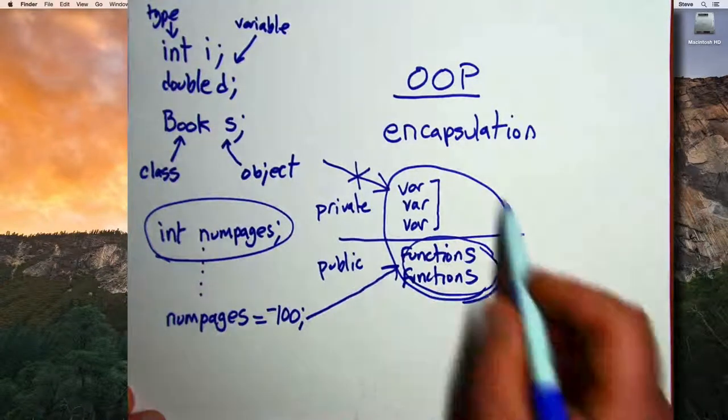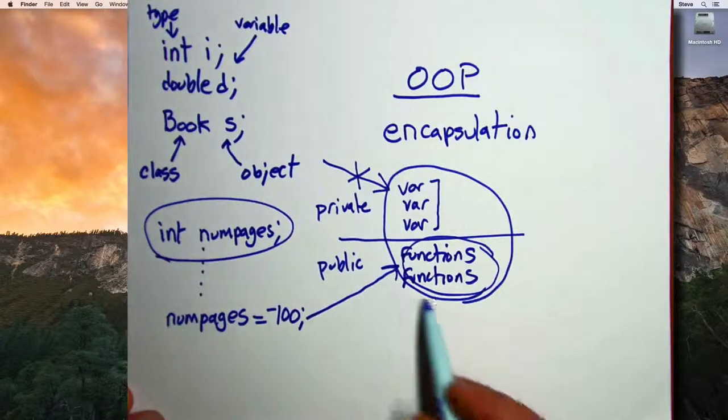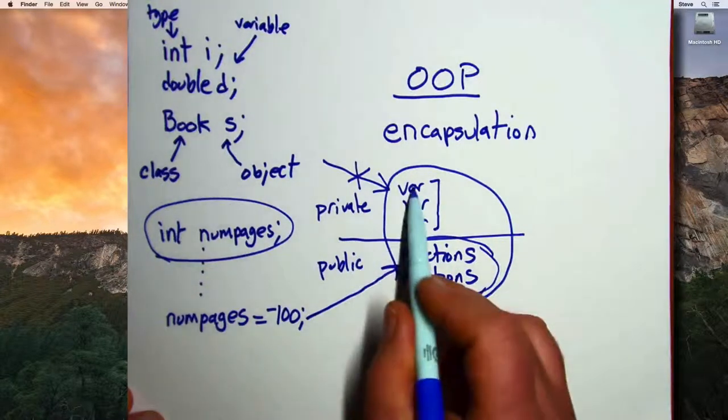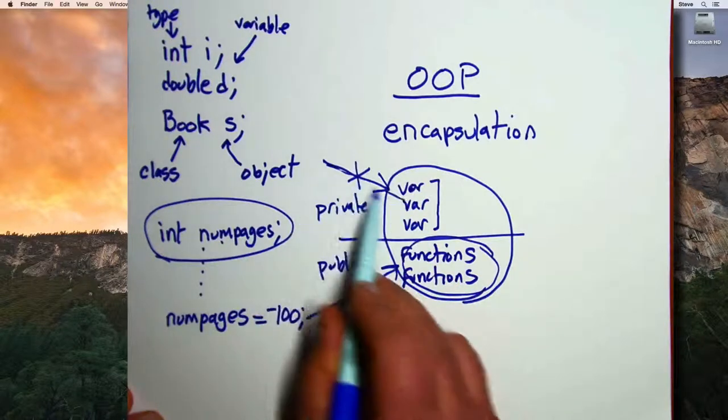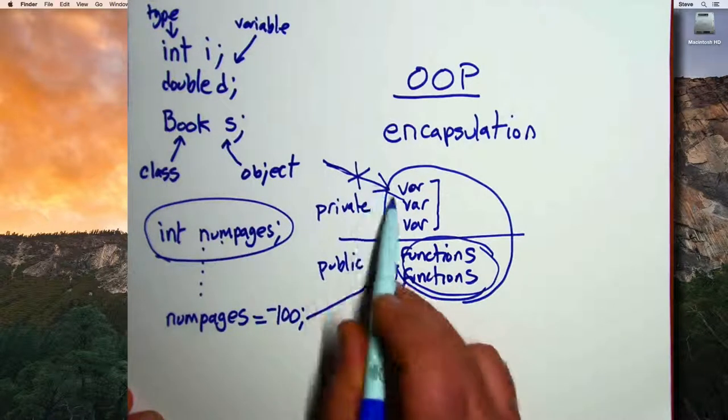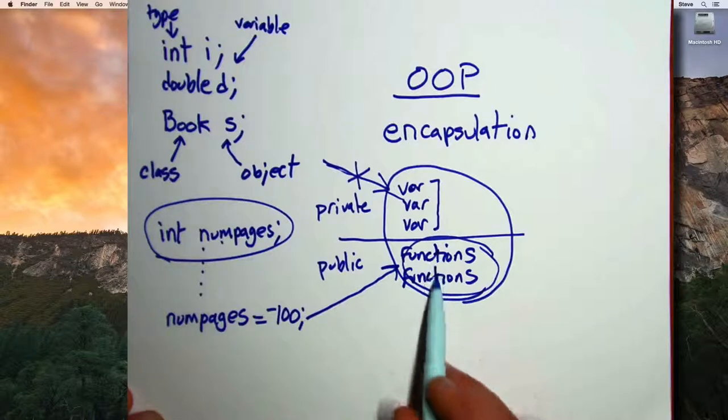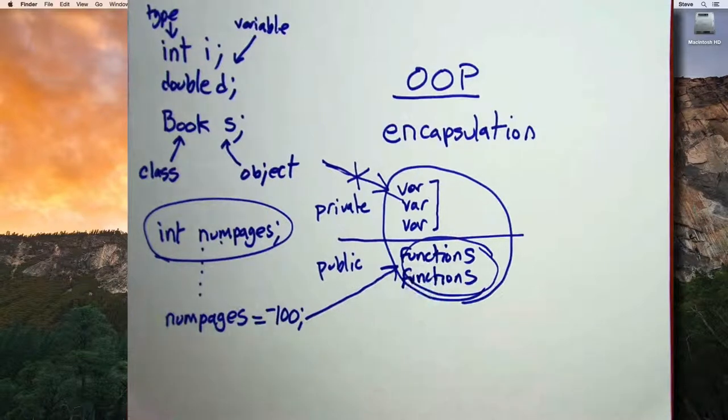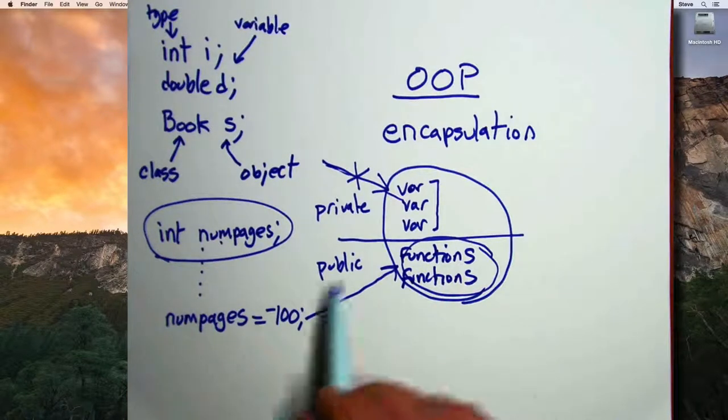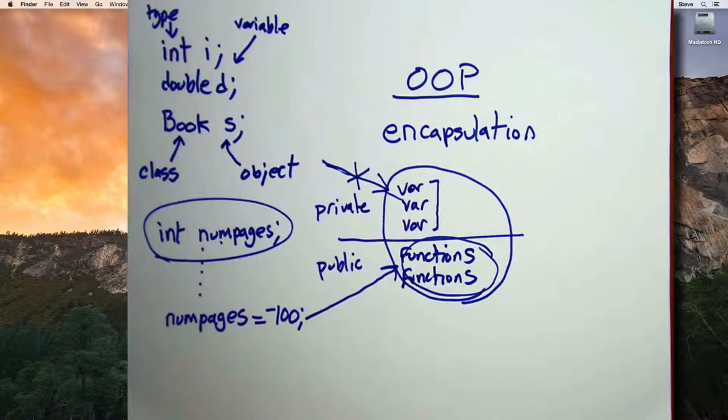But with object-oriented programming, there is a way to do that. Because the variable that creates the number of pages can't be gotten at in general. And its access is going to be limited to a certain number of functions where, for example, we can guarantee that that variable can't be set to be a value less than 5.